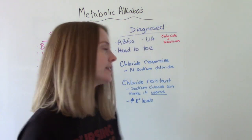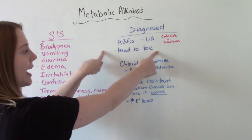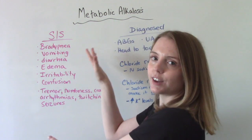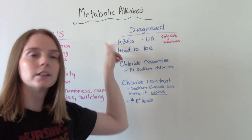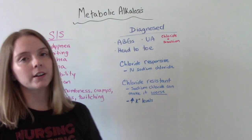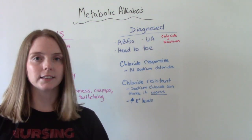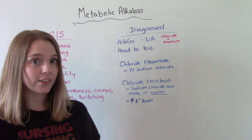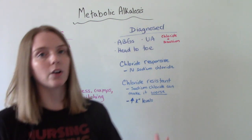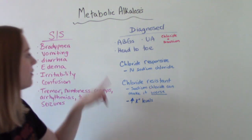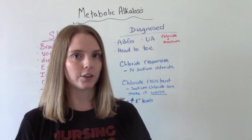How is it diagnosed? We want to do a good head-to-toe assessment to see if they have any of these symptoms. Of course, we're going to check their ABGs. We're also going to do a UA — a urinalysis — specifically checking for chloride and potassium levels. This is significant because it helps us determine what kind of metabolic alkalosis they have: chloride-responsive or chloride-resistant.